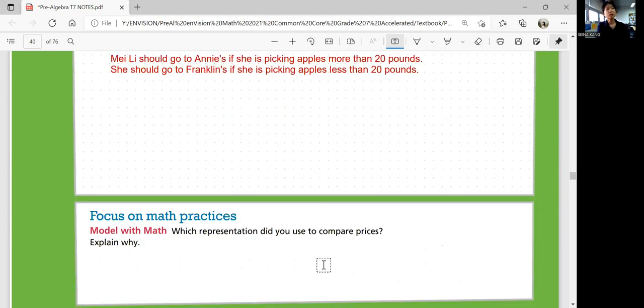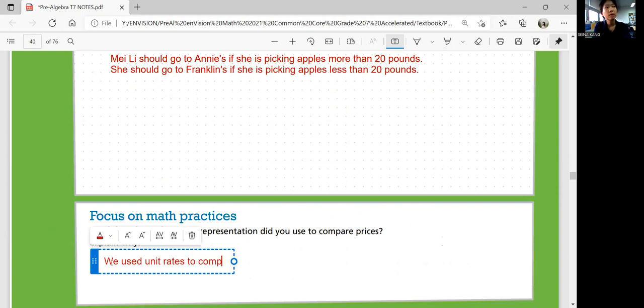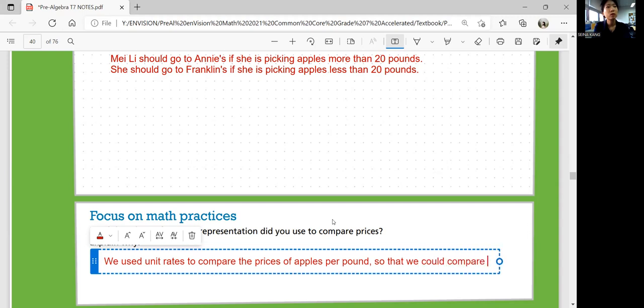So focus on math practices. Which representation did you use to compare prices? Let's explain why. We used unit rates to compare the prices of apples per pound so that we could share prices easily.